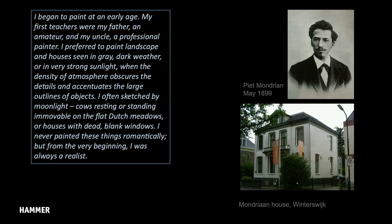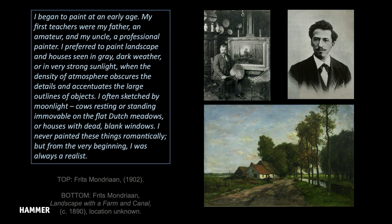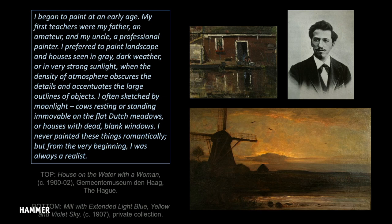Here's Mondrian writing at the age of 70 and looking back. He said: 'I began to paint at an early age. My first teachers were my father, an amateur, and my uncle, a professional painter. I preferred to paint landscape and houses seen in gray, dark weather or in very strong sunlight when the density of atmosphere obscures the details and accentuates the large outlines of objects. I often sketched by moonlight — cows resting or standing immobile on the flat Dutch meadows, or houses with dead blank windows. I never painted these things romantically, but from the very beginning, I was always a realist.'